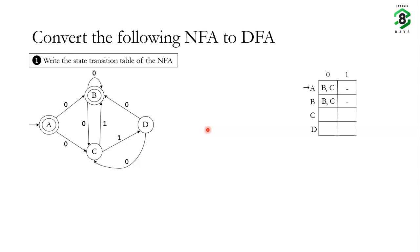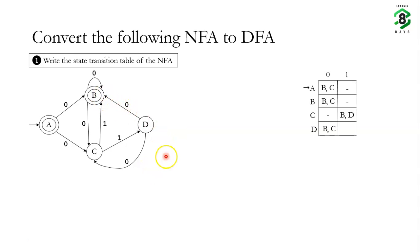From state C on input 0, there is no transition. But on input 1 from state C, the machine could transition to either state B or state D. On state D with input 0, the machine can transition to either state B or state C, but on input 1 there is no transition. This is the state transition table of the NFA.